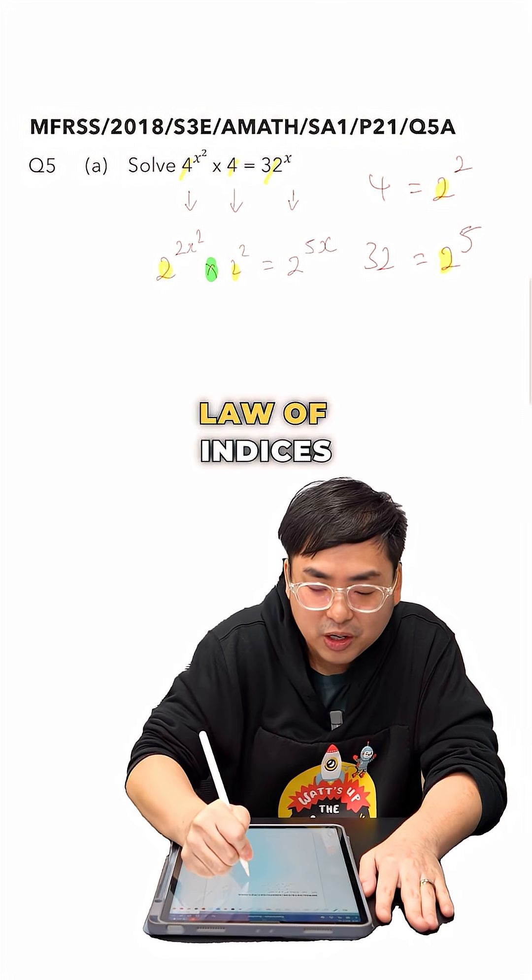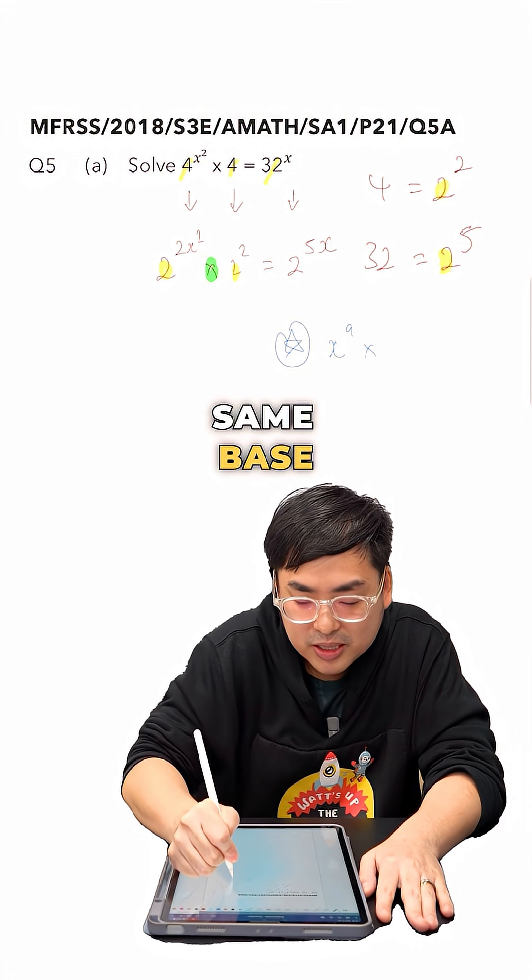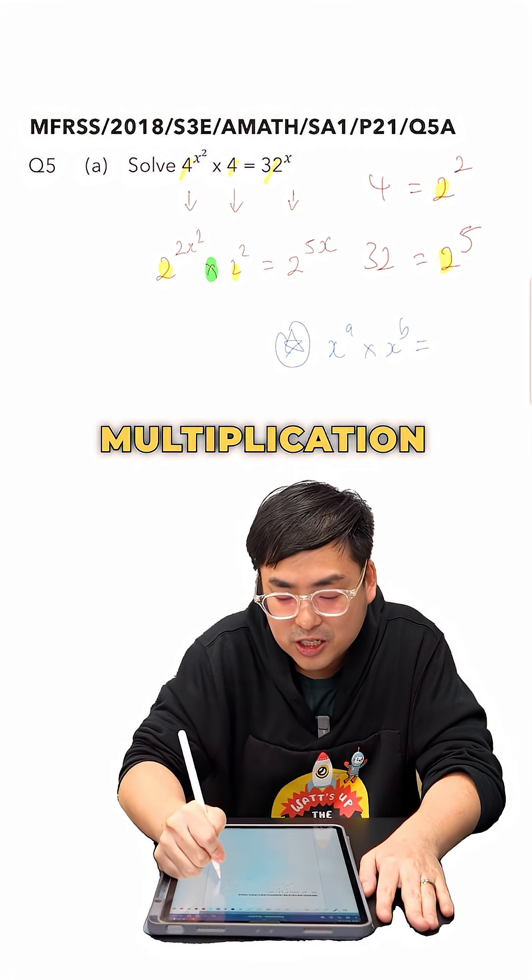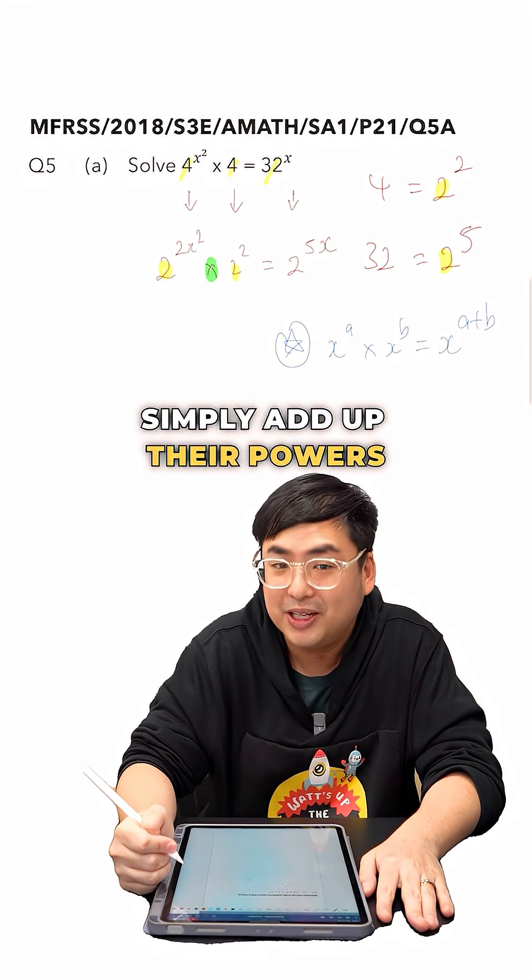We can then use our favorite law of indices, where we have our same base coming together by multiplication, and on the right we will simply add up their powers.